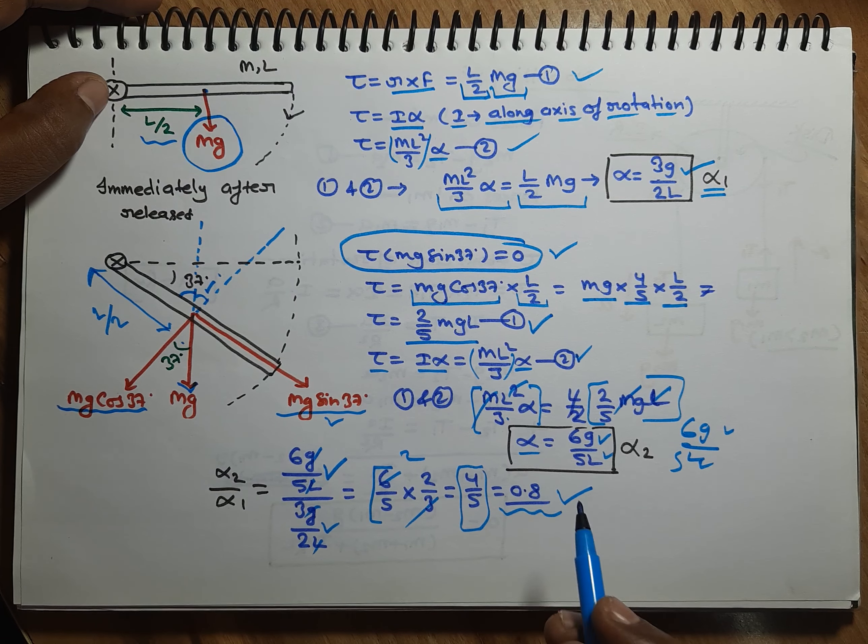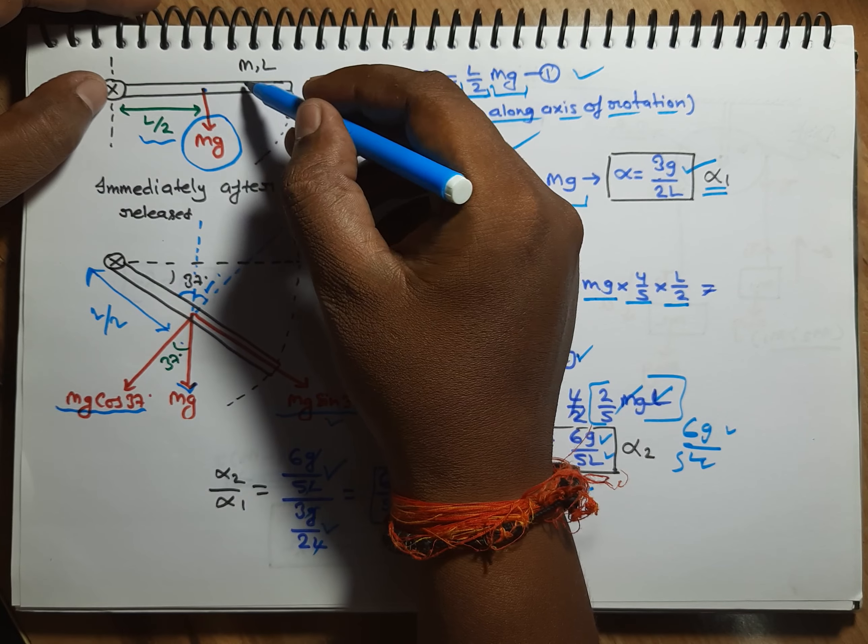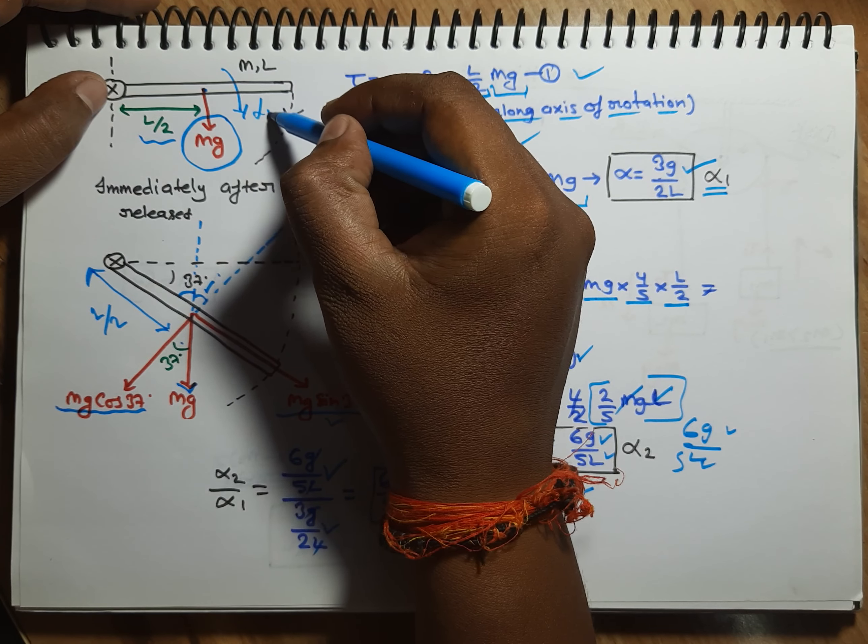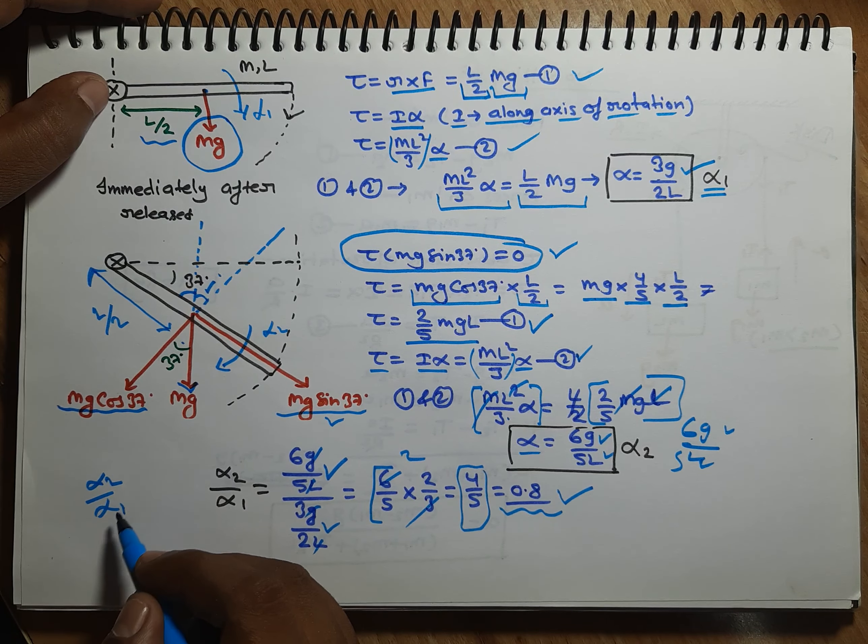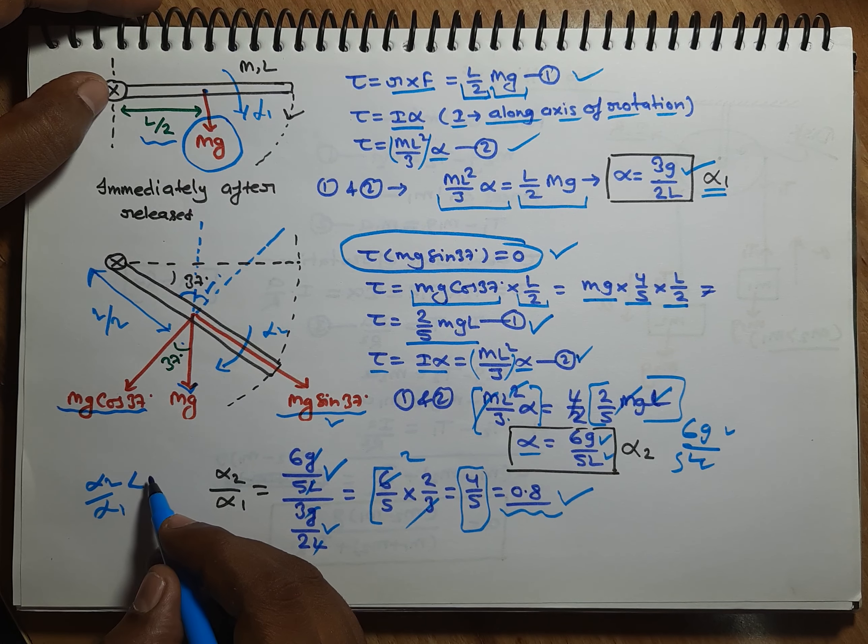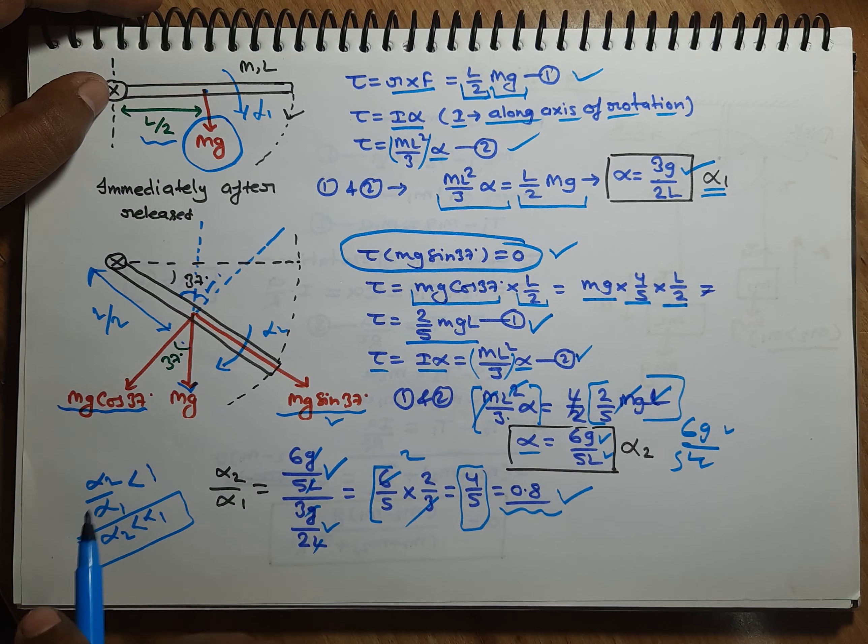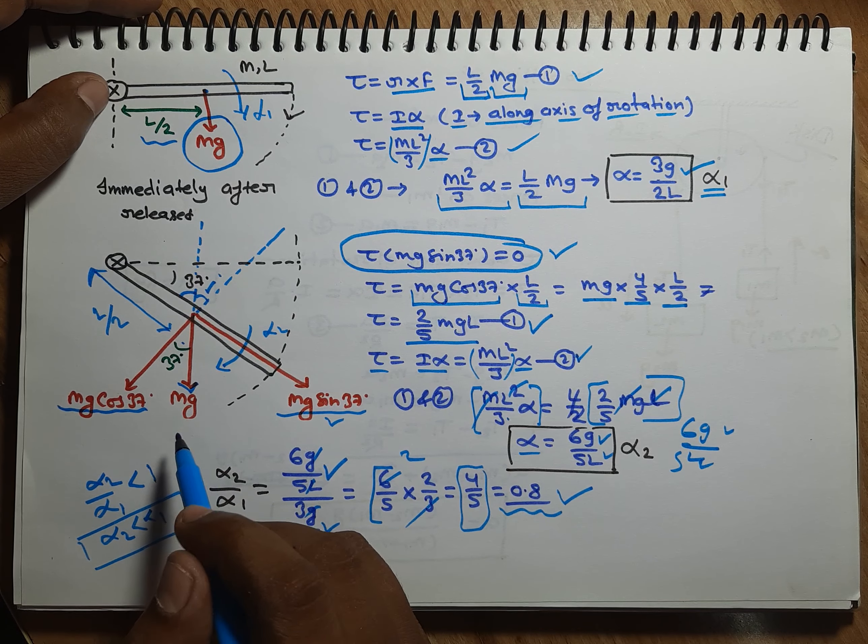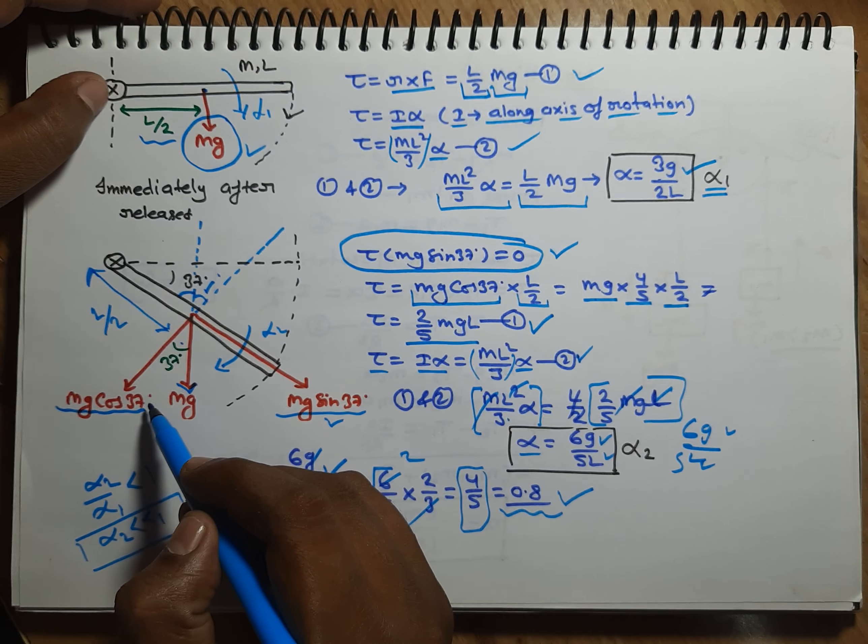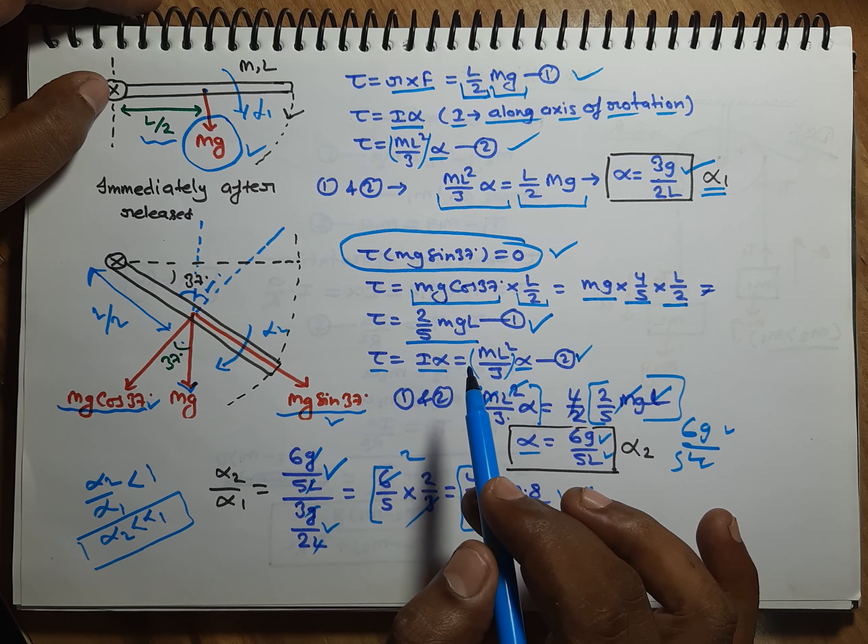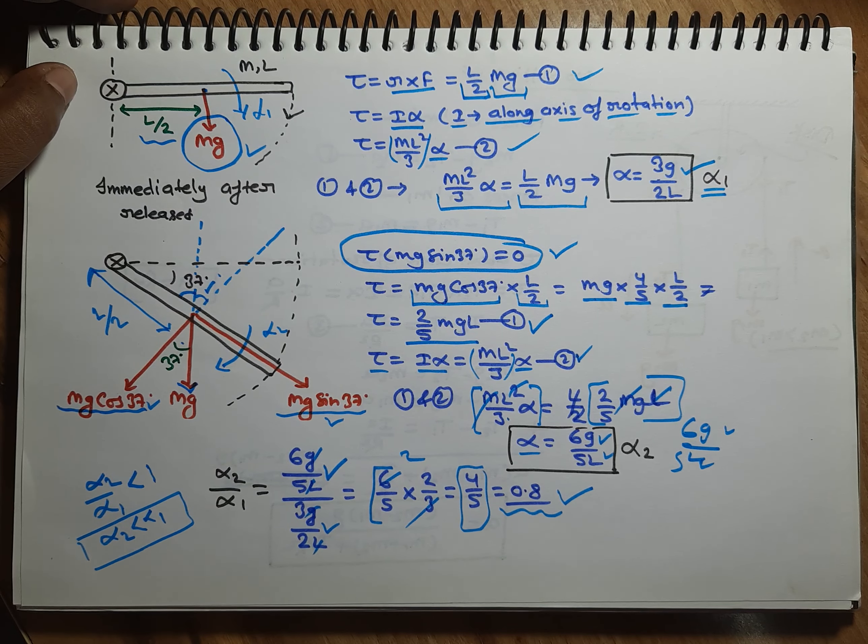Now friends, if we talk about analysis here, friends, its angular acceleration here is α₁. Here it is α₂. Friends, α₂ by α₁ which is, what is it? It's less than 1. This means α₂ is less than α₁. Now why is this happening? Friends, the acting force which is providing the torque has decreased. Here it was Mg, here it is Mg cos 37. So its angular acceleration has decreased.